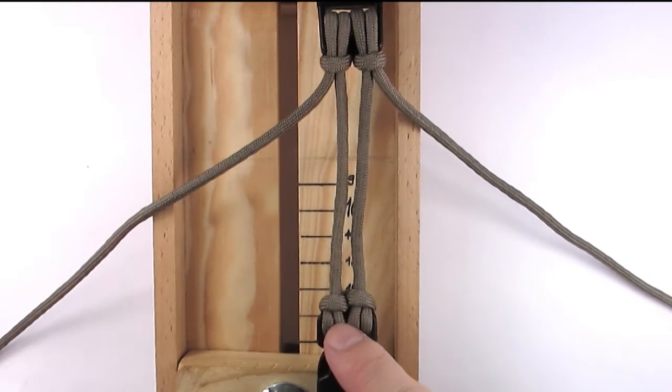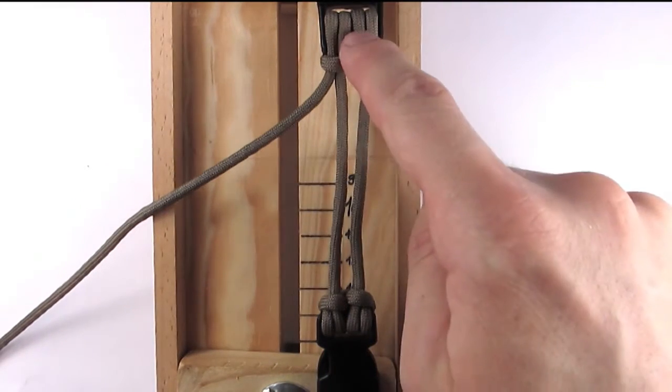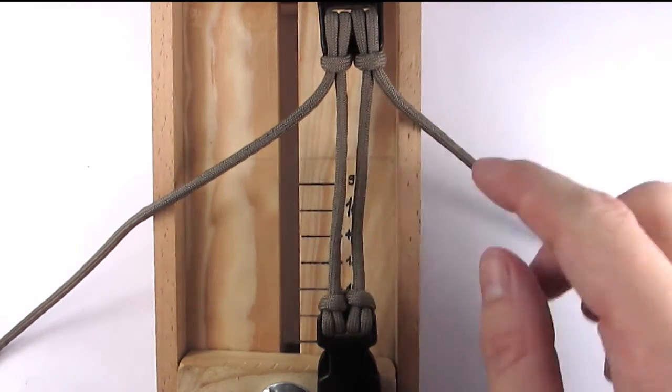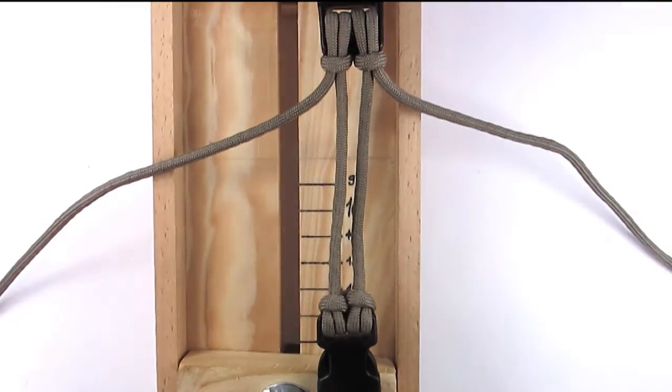Here you can see the cowhitches, two at the bottom and two at the top, with our cord on the inner side of our hitches and the working ends at the outer side.